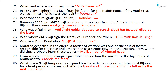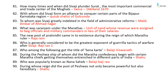Shivaji was born in 1627 at Shivneri. In 1637, Shivaji inherited a jagir — Pune — from his father for the maintenance of himself and his mother. The religious guru of Shivaji was Ram Das. Between 1645 and 1647, Shivaji conquered three forts from the Adil Shahi ruler of Bijapur: Raigarh, Torna, and Kondana. Afzal Khan was an Adil Shahi noble deputed to punish Shivaji but was instead killed by the latter. Shivaji signed the Treaty of Purandar in 1665 with Raja Jai Singh.